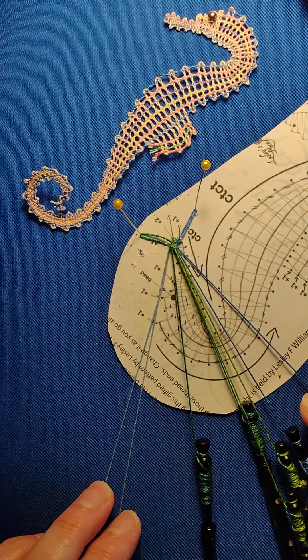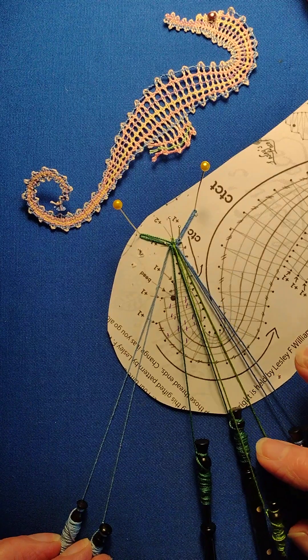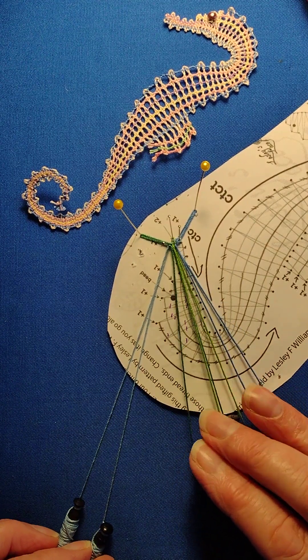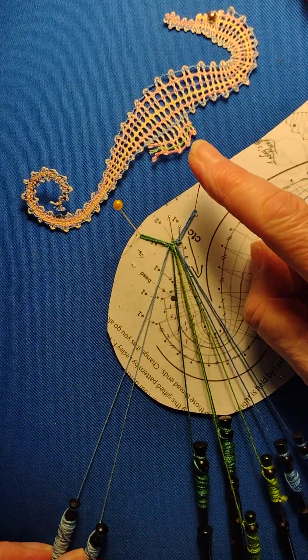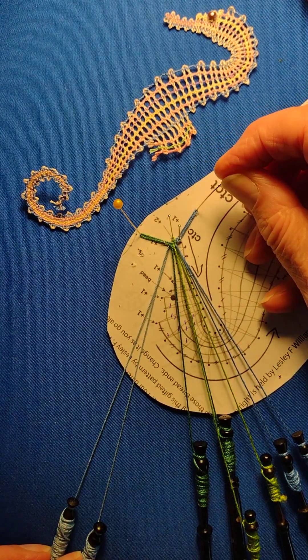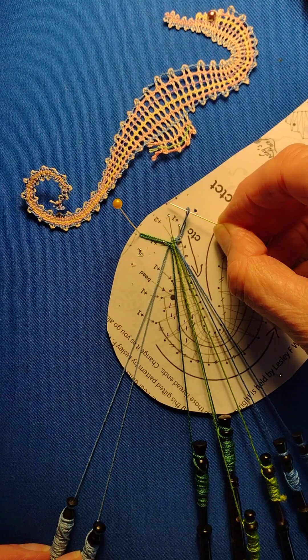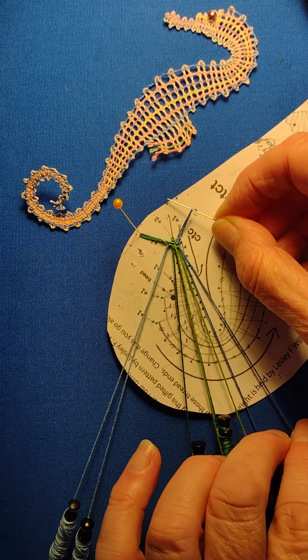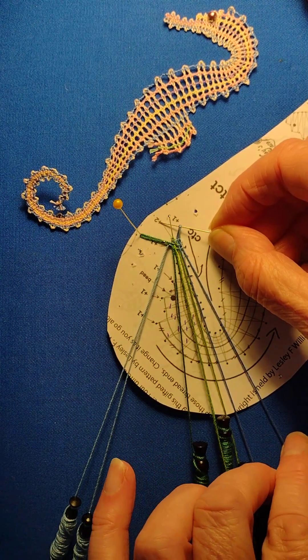So I'm going to hold the worker pair snugly and tension down the passives. At this point you can take this pin out and take it out and try and keep hold of it, hold of the thread in the loop.